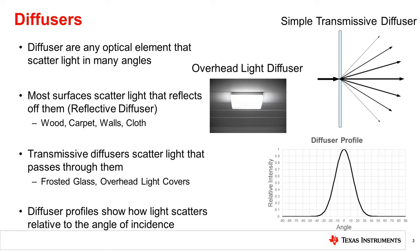Diffusers can either be reflective or transmissive. Most objects in the real world behave as a reflective diffuser. Things like walls, wood, and cloth often have unsmooth surfaces with slight bumps that scatter the reflective light into many angles. Transmissive diffusers also scatter light, but do so with light passing through, not reflecting off the surface. Transmissive diffusers can be achieved with surface textures, like with frosted glass or simple film diffusers.